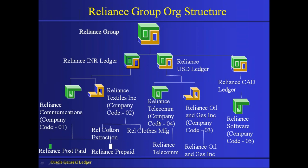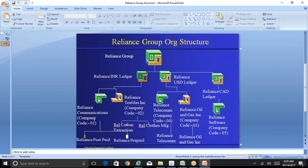The first step in AGIS, apart from creating the responsibility, is to define these legal entities as intercompany organizations. AP and AR store data at the operating unit level. In GL you use the term ledger; in fixed assets, corporate book or tax book; and similarly in AGIS we use the term intercompany organization. Reports are based on the intercompany organization.